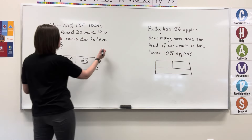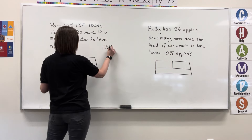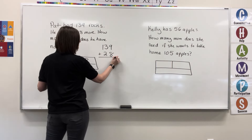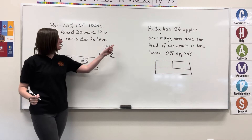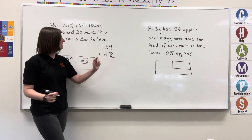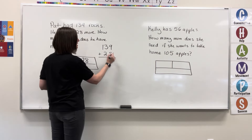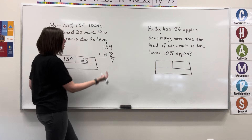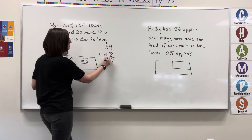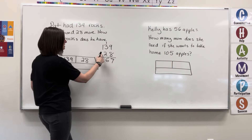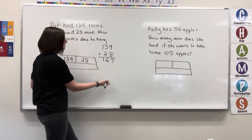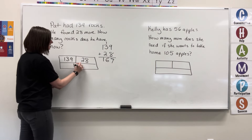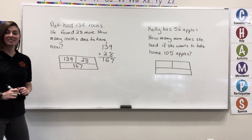So let's stack it up. I have 139 plus 28. Starting in the ones column, 9 plus 8 equals 17 — write the 7, carry the 1. 1 plus 3 equals 4, plus 2 equals 6 — write the 6. 1 plus nothing equals 1 — write the 1. He ends up with 167 rocks.